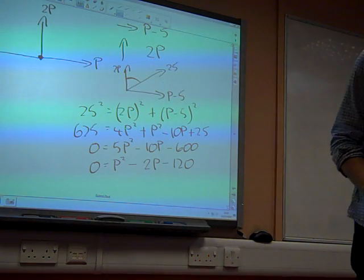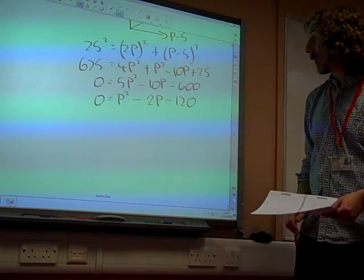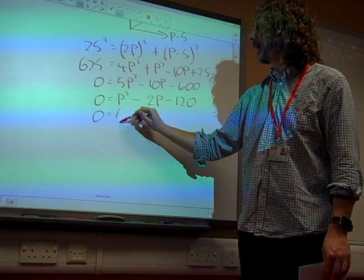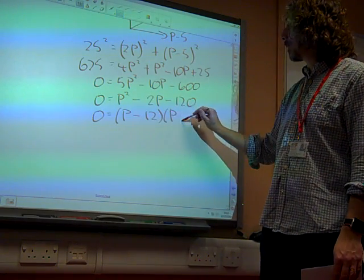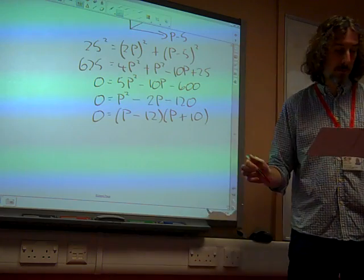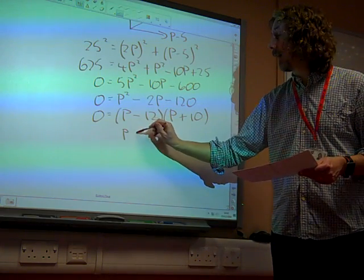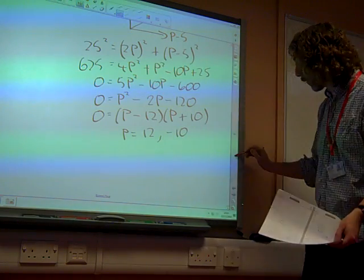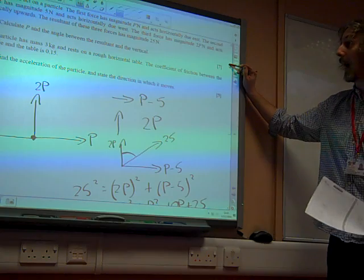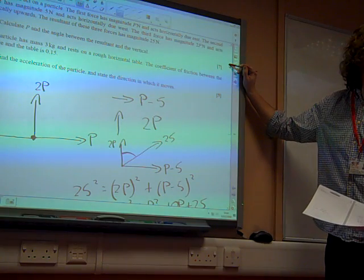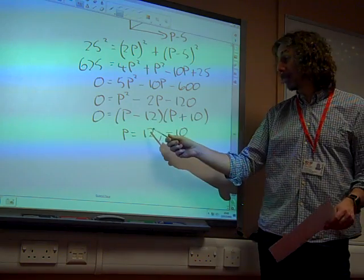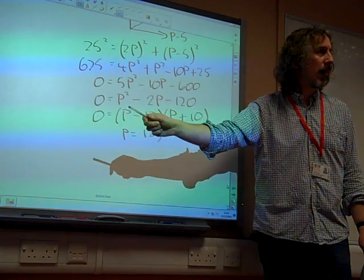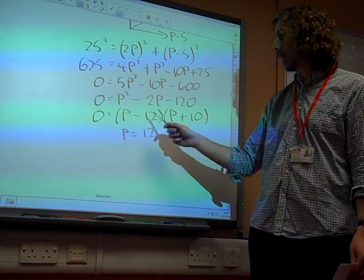Does it factorize? Yes it does, 10 and 12. So if we factorize that as P minus 12 times P plus 10, we get that P is 12 or minus 10. And we now need to decide which makes sense. We were told that P acts horizontally due east. If P is minus 10, then it's not acting horizontally due east, that would be acting horizontally due west. So P must be the positive one, it must be 12.